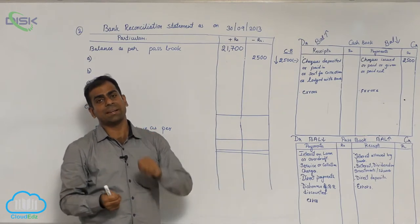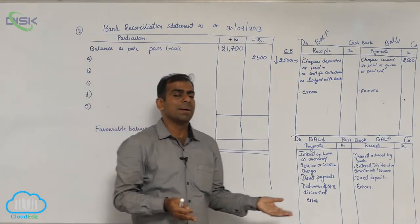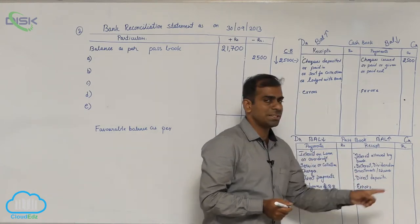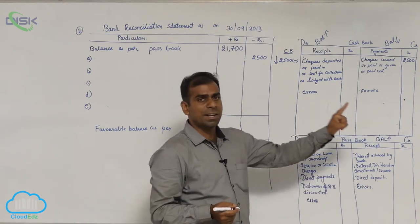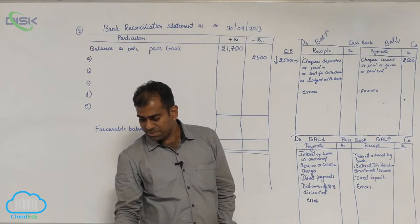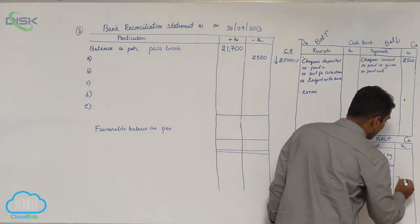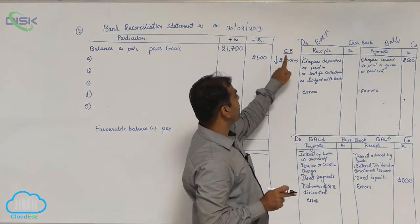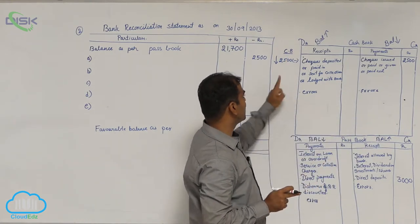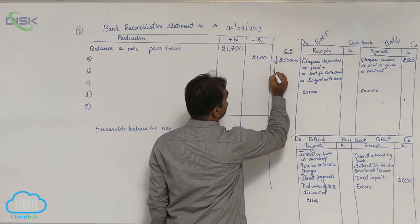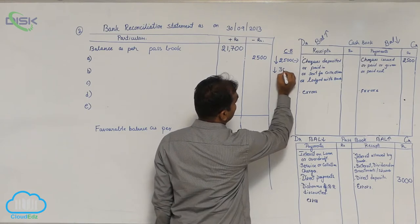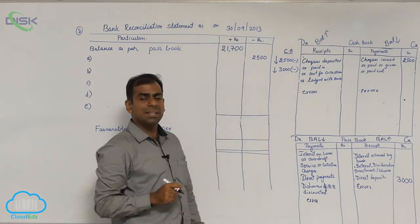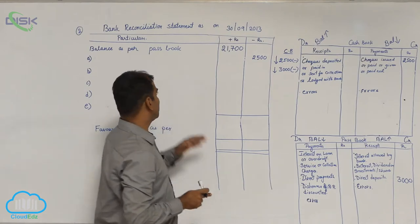Direct deposit by customer means your customer is directly putting money in your bank account. Since he goes directly to the bank, the banker will know first, so the entry will be first in the pass book. Check which side in the pass book — it is on the receipt side or credit side. Enter that amount of 3,000 on the receipt side of the pass book. When something is entered on the credit side of the pass book, pass book balance will increase, but we are finding out cash book balance, so we give the opposite treatment — cash book balance will decrease by 3,000. Decrease means minus.